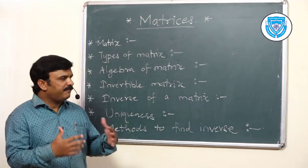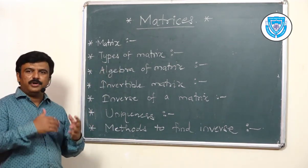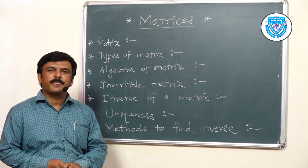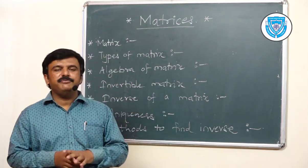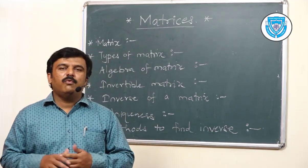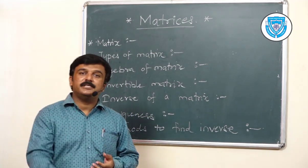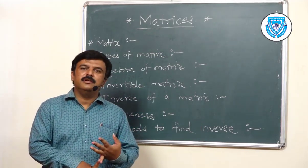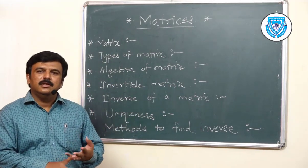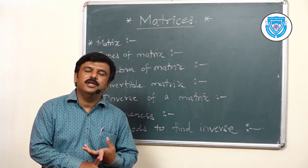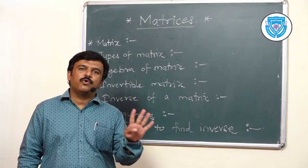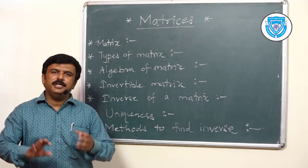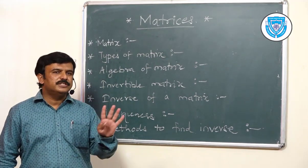After discussing types of matrices which we already covered in class 11, let us talk about the algebra of matrices. In case of matrices, we can perform some operations. The four operations are: addition, subtraction, multiplication, and scalar multiplication. We have already solved many examples based on these four operations. But remember, we can perform these operations only under certain conditions — it is not that we can take any two matrices and add, subtract, or multiply them.